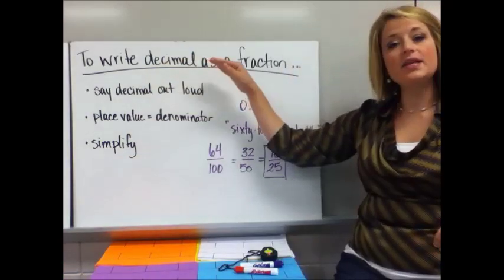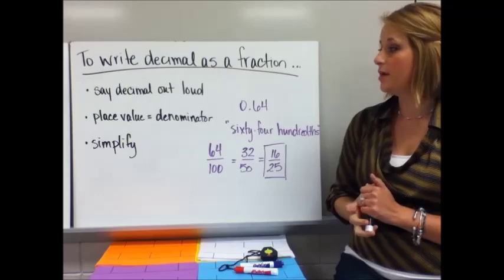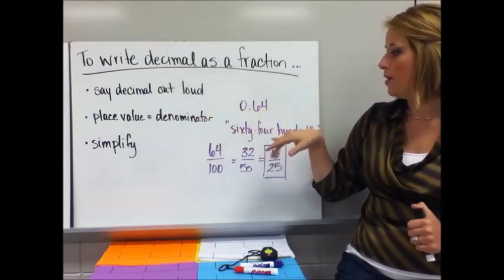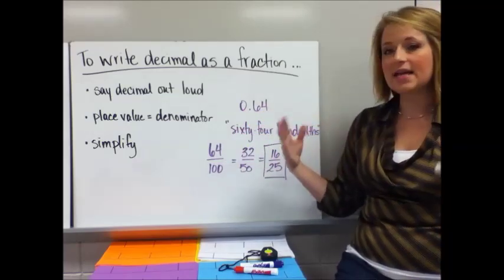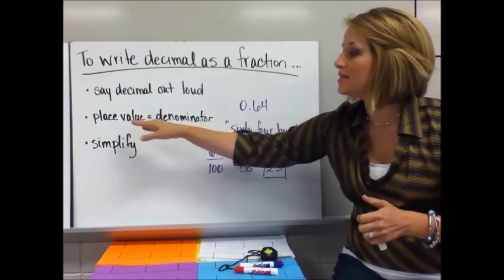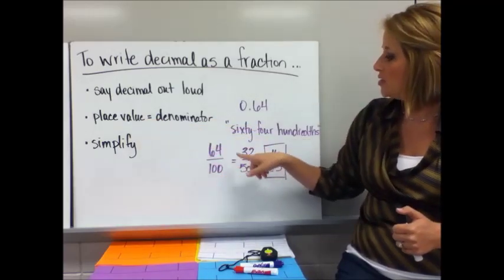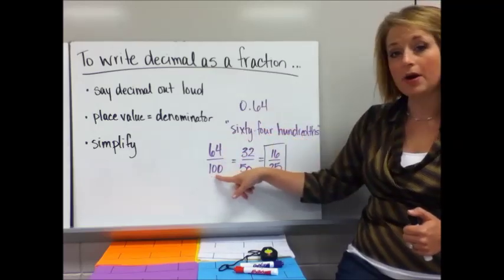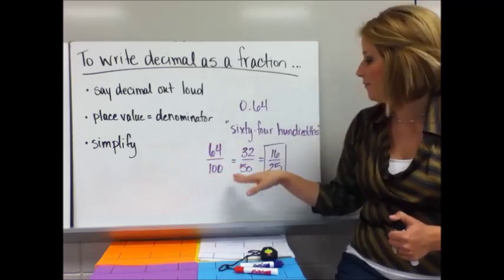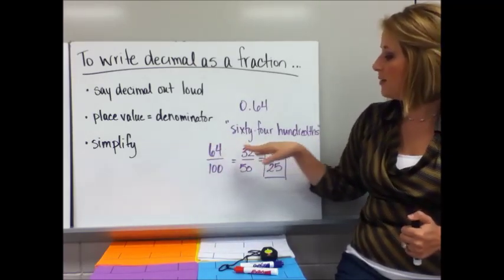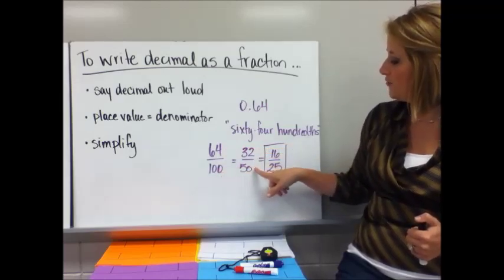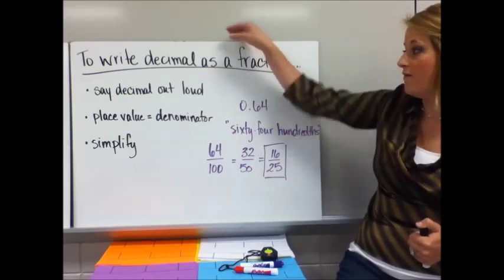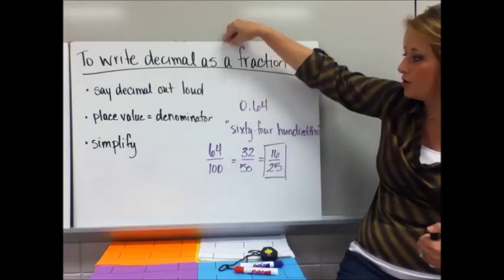Now the other direction — you have the decimal and you want to write it as a fraction. The first step is to say the decimal out loud. So I have 0.64 — that's 64 hundredths. I say it out loud to show myself the place value. The place value equals the denominator. So I put 64 on top and 100 on the bottom. Then I simplify by dividing by two: 64 divided by 2 is 32, and 100 divided by 2 is 50. Then again: 32 divided by 2 is 16, and 50 divided by 2 is 25. My final answer is 16 over 25.